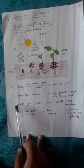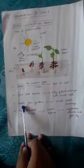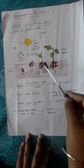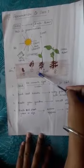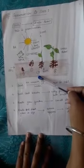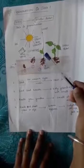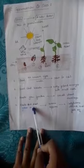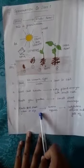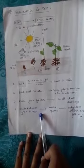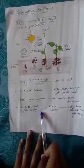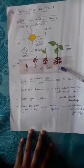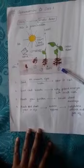The next step is the roots grow further and a small shoot develops, shown by the number 3 in the diagram. Finally, the roots and the shoots grow in size, leaves appear, and the cotyledon shrinks and falls off, as shown in the diagram by the number 4.